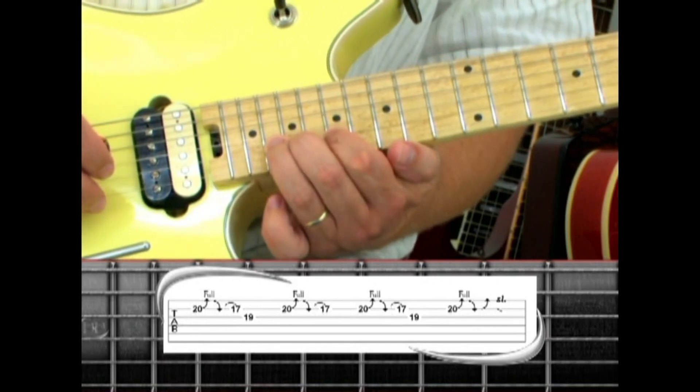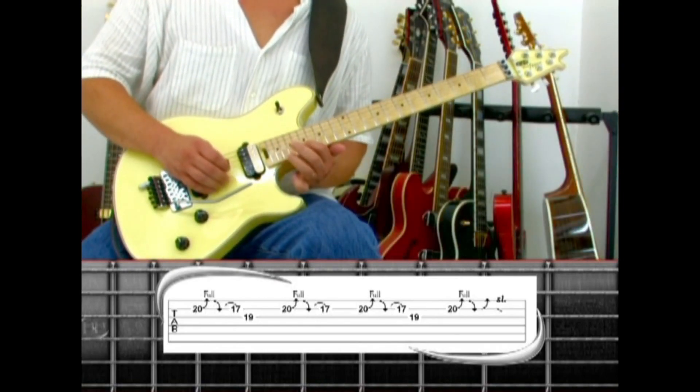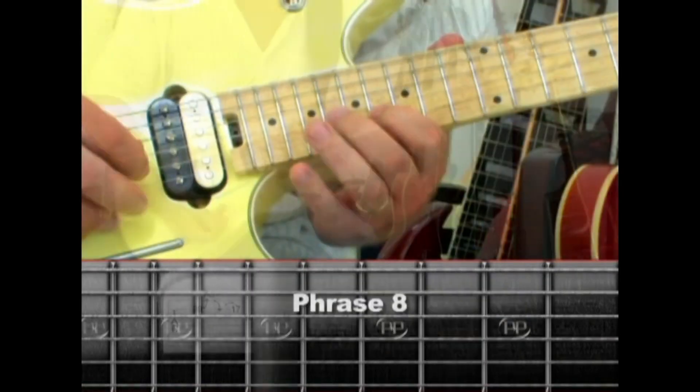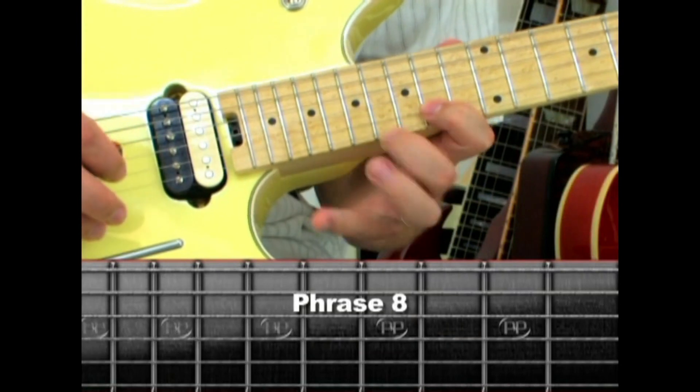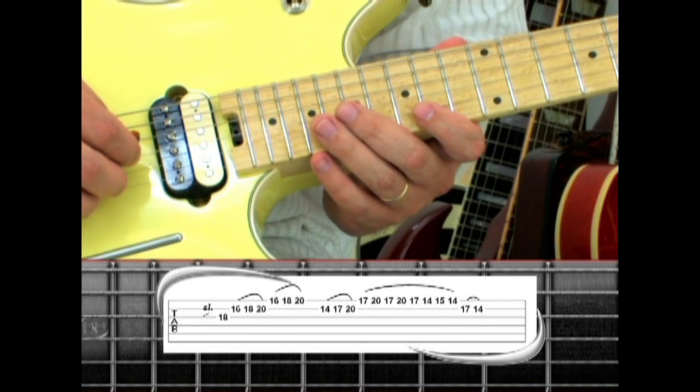Back to second string 20, bend, release, bend, and slide down the neck. Slide the middle finger up the third string to the 18th fret to start off phrase eight.